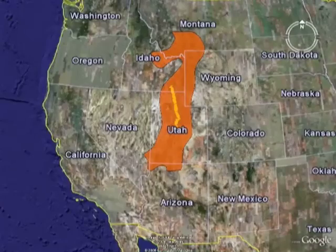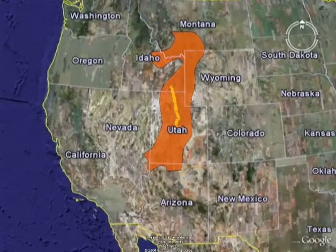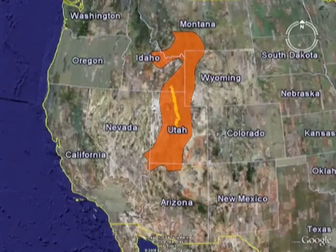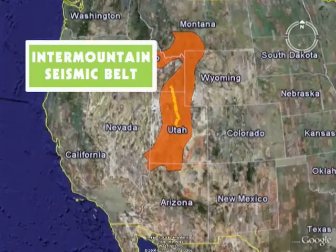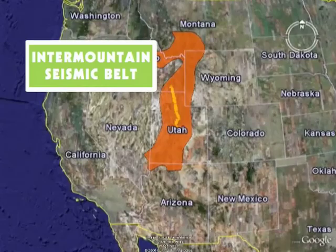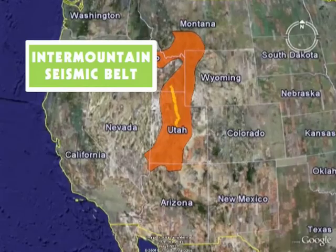Although most earthquakes occur near plate boundaries, there is an area of increased earthquake activity within the interior of the North American Plate, known as the Intermountain Seismic Belt. The belt extends 800 miles from Montana to Nevada and Arizona.